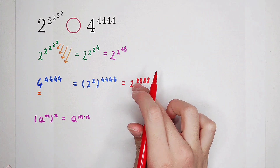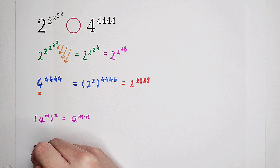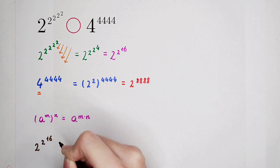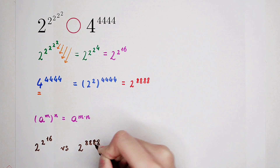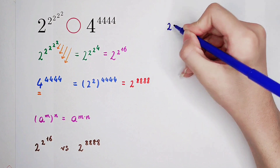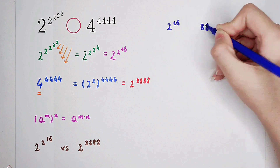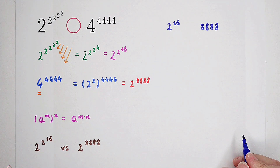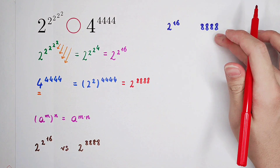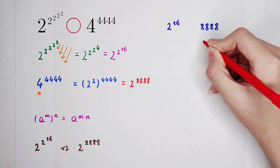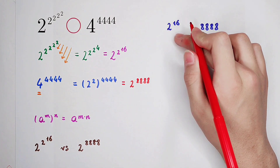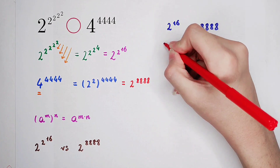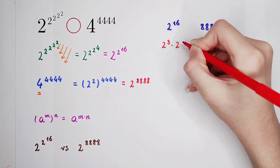We have only to compare these two numbers. Now we should compare 2 to the power of 2 to the power of 16 and 2 to the power of 8,888. So which is larger: 2 to the power of 16 or 8,888? Factorization: 8,888 can be written as 8 times 1,111. And 2 to the power of 16 can be written as 2 cubed times 2 to the power of 13.